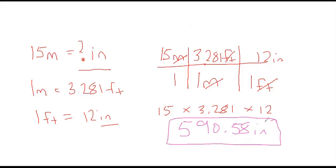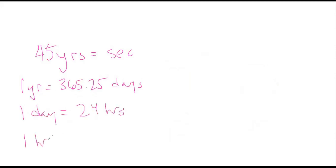Let's try another one. This is all we're going to do this whole period. We'll go 45 years, how many seconds is that? So again we need our conversion factors. One year has 365.25 days, one day is 24 hours, and one hour is 3600 seconds.